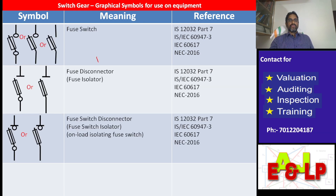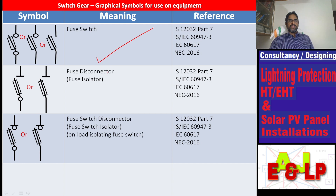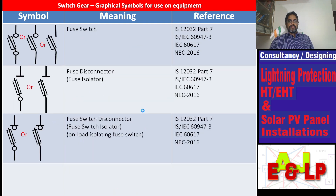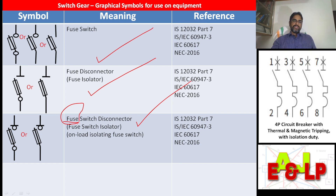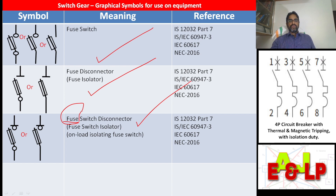Here it is fuse switch. Then fuse disconnector or fuse isolator. Then fuse switch disconnector — meaning the supply flow will be completed with the fuse first, then only the other part will be completed. So we call it fuse switch disconnector.